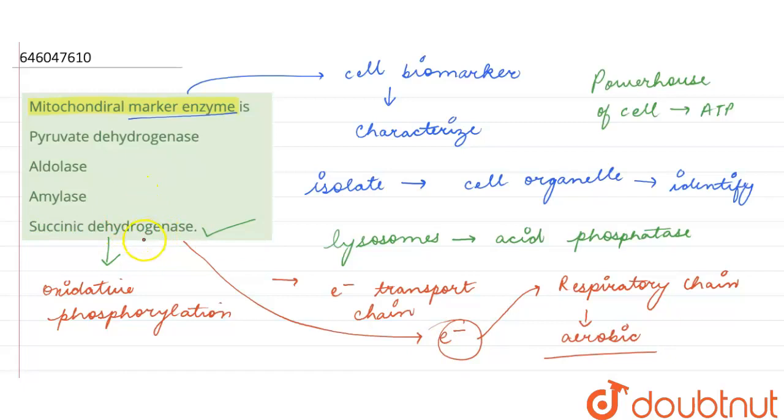So, mitochondrial marker enzyme will be option 4 succinic dehydrogenase. It is not pyruvate dehydrogenase, not aldolase and not amylase as well. So, option 4 is the correct answer. Thank you.